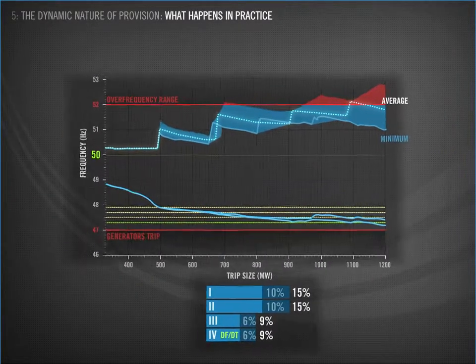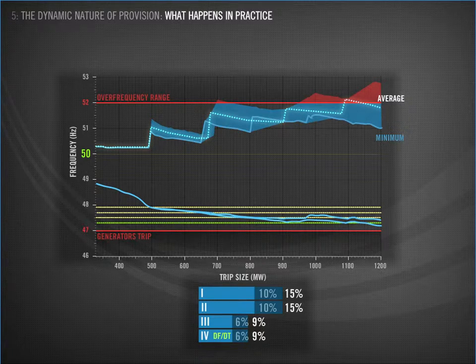So how can we manage surplus provision? A lot of this depends on provision behaviour and how much surplus provision we get on the system. Provision is really based around being compliant with the code, and how the requirement is expressed affects how AUFLS is provided. This is an area that the Electricity Authority is looking at closely, but we can talk theoretically about some of the ways we can manage the issue.